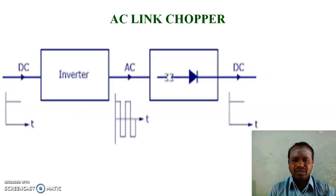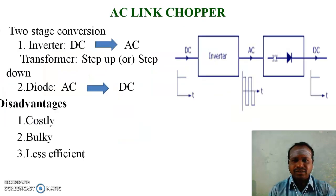In AC-linked chopper, there are two stages of conversion present. In the first stage, an inverter converts the given DC voltage to AC. Then, a transformer steps up or steps down the AC voltage. In the second stage of conversion, the diode rectifier converts the AC back to DC.